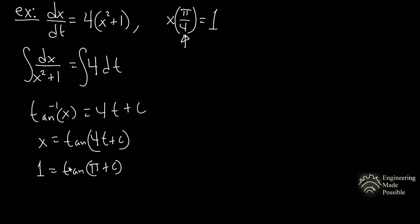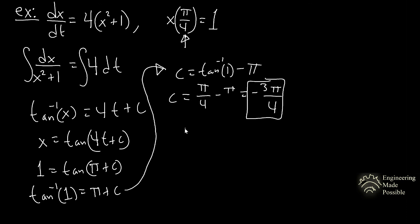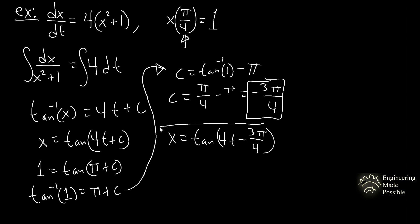We have 1 equals tangent(π + C). Solving algebraically for C gives C equals negative 3π/4. Plugging that back into the equation, the final solution is x equals tangent(4t − 3π/4).